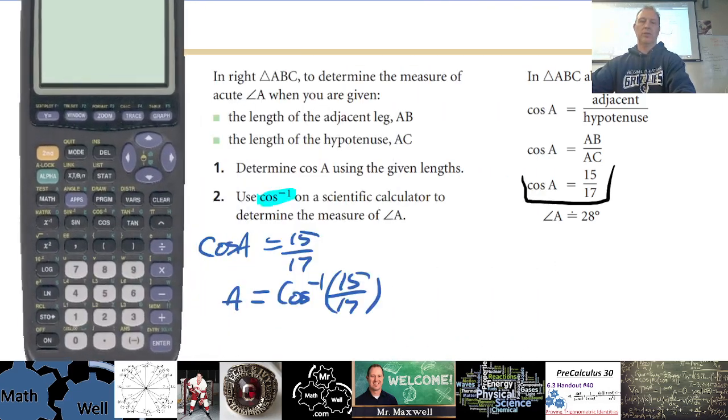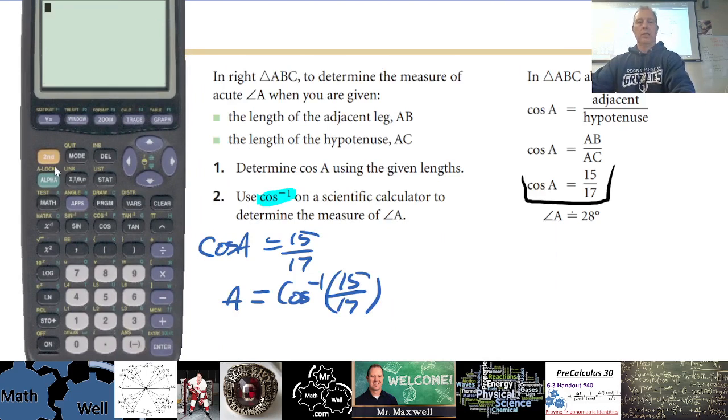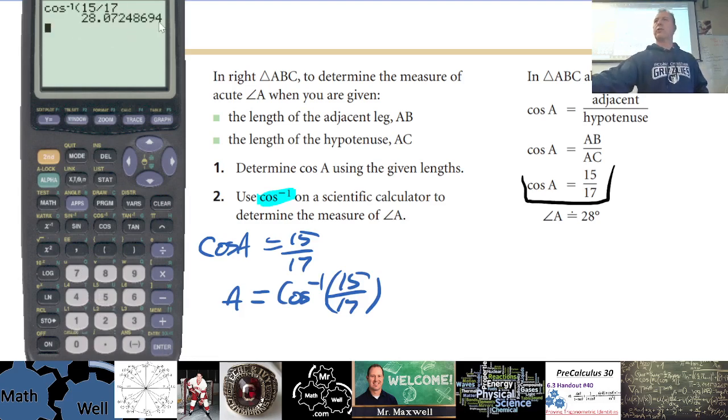You just punch it in. So let's see, turn that on, clear, second function, cos, 15 divided by 17, and that'll give you your answer. Now you do have to make sure your calculator's in degrees. Notice this is asking for degrees. That's the only unit of measurement for angles that you know about right now. Other measurements would be radians - that's the other big one. I'll teach you about that in grade 11 or 12, whatever that turns out to be. But right now you want to make sure your calculator is on degrees.